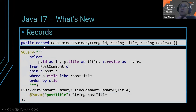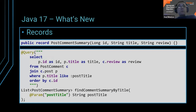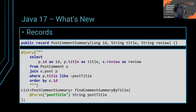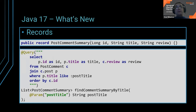That's not the only thing — you also have support for records. A record is a more compact way of declaring a value object or data transfer object. Previously you would write the DTO as a POJO: create the fields, getters, setters, constructor, equals, hashCode, toString. Some of you would use Lombok to avoid all that boilerplate. Nowadays you don't really need Lombok because you have records. Creating a record is as simple as that, and then you can use it in your DTO projections.